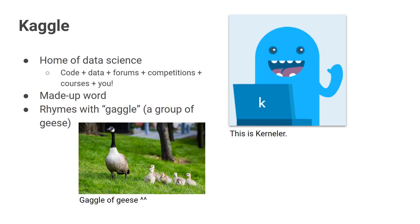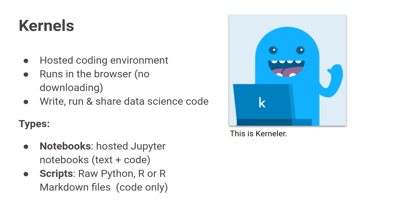First of all, what is Kaggle? Kaggle is the home of data science. We've got code, data, forums and places for you to chit chat and learn new things, ways to sharpen your skills like competitions and courses, and of course, you — our Kaggle community. Kaggle itself is a made up word. Anthony Goldblum, the Kaggle CEO, generated it with a computer. And it rhymes with gaggle, which is the English word for a group of geese.